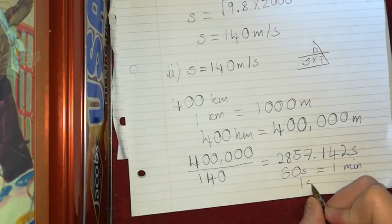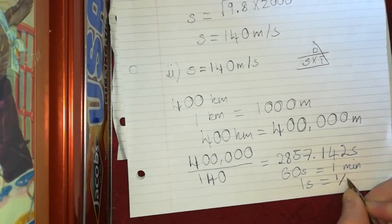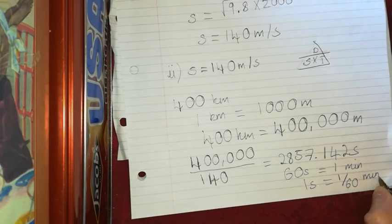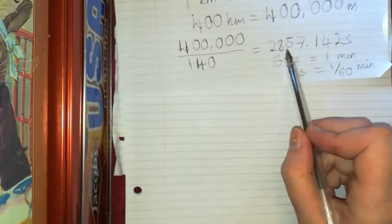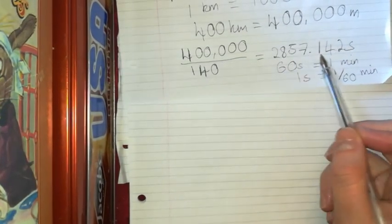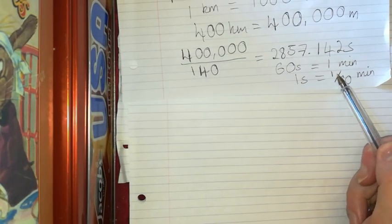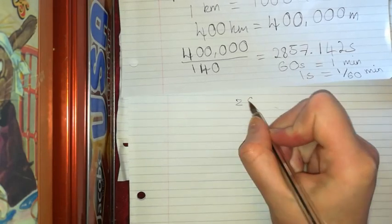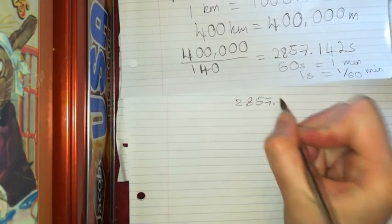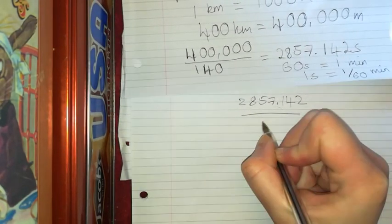But I know that 60 seconds is equal to 1 minute. So 1 second is going to be 1 over 60 of a minute. So 2857 seconds is going to be 2857 over 60.